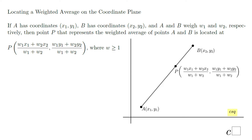My next part of the lesson will be about locating points using the weighted average on the coordinate plane. You notice the formula is very similar, with just the difference that you have to use it twice — because you have an X and a Y coordinate. The math will be the same. Let's see an example.